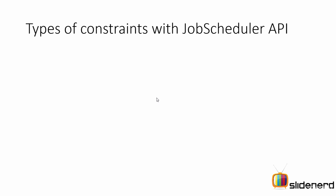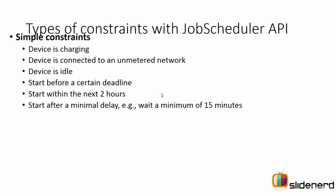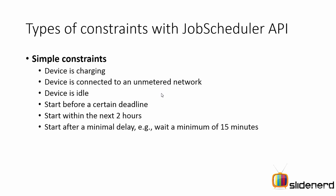There are certain constraints you can specify with the Job Scheduler API — simple and complex constraints. For simple constraints: you want to run a job only when the device is charging, only when the user is on a network that won't incur charges, when the device is idle, or you want to start before one hour, or within the next two hours, or wait 10 minutes and then start a job.